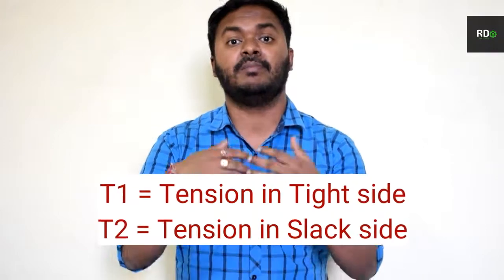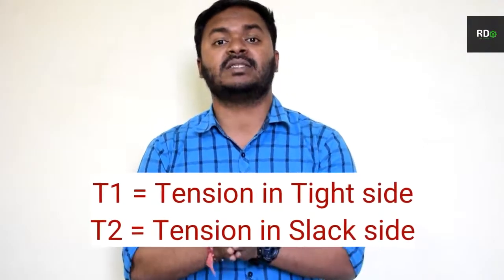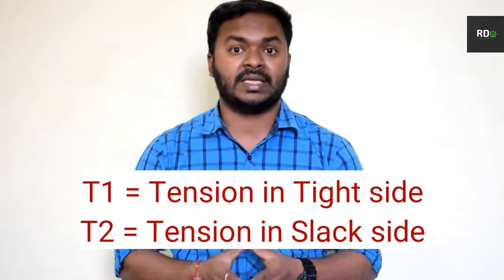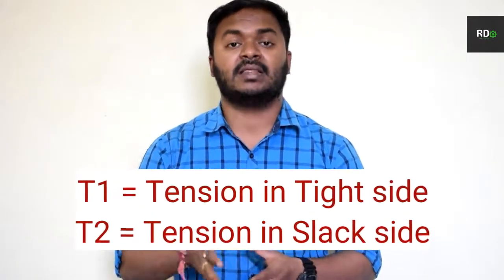The tight side will always be represented as T1, the tension in the tight side, and T2 is the tension in the slack side.